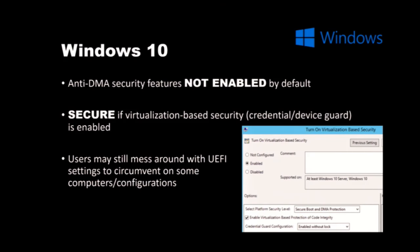Actually, Windows 10 does have some very nice anti-DMA features built in, in the enterprise version, but they are not enabled by default. Windows 10 can be made rather secure against DMA attacks if the virtualization based security features are enabled, like Credential Guard and Device Guard. But it's quite easy for users to mess around with settings in the UEFI — for example disable VTD or disable Secure Boot — and then the virtualization based security features will be disabled in Windows as well.